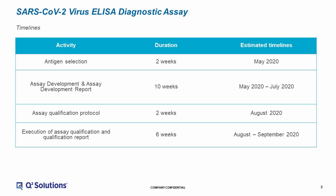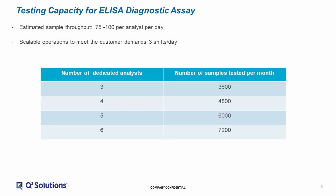Q-Squared Solutions is well on its way towards the deployment of the assay for clinical testing. We have completed the antigen selection, met the development, and are just about ready to start on assay qualification, where we anticipate the assay will be ready for clinical testing by September of this year.